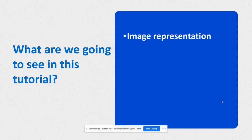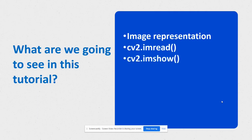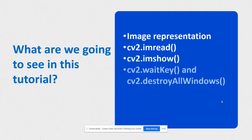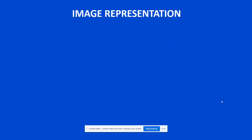First, jumping into the OpenCV library, let us see how an image is represented in all image processing applications. Once we have seen that, we'll be looking at cv2.imread, cv2.imshow, cv2.waitKey, and cv2.destroyAllWindows functions.